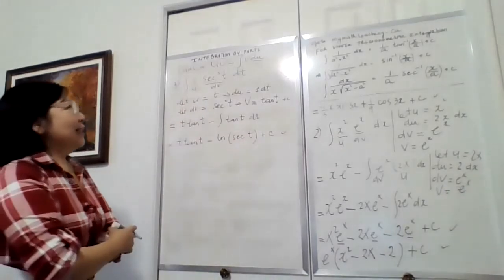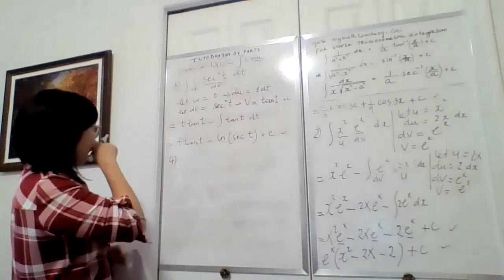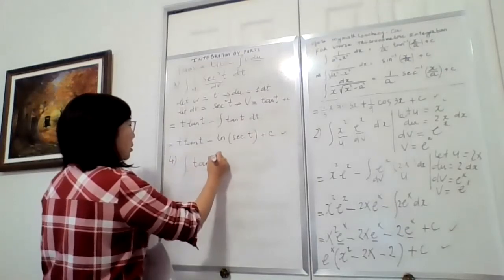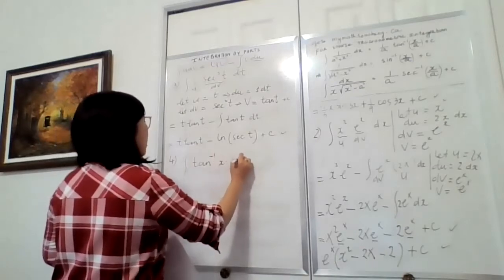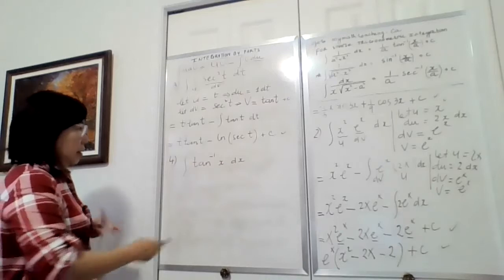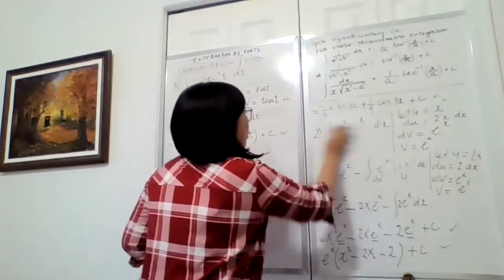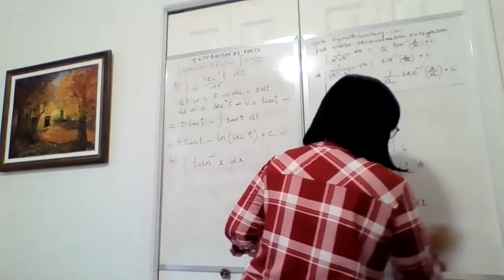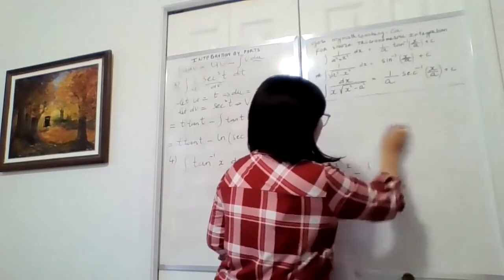That is our answer for example 3. Now I'm going to give you another example. Another example: if you have to take the integral of a trigonometric inverse function, let's say arctan(x) dx. You might say this one only has one function, so why do we bother to do integration by parts?